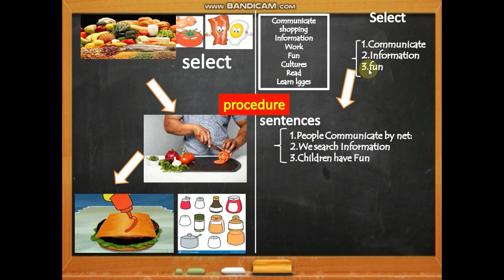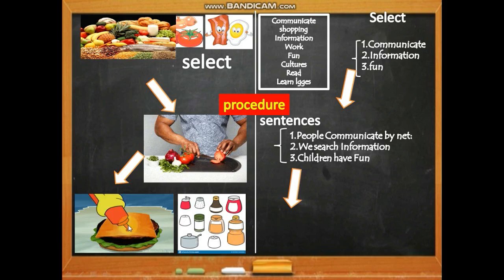Keep the sentences simple. Subject, verb, object — that's it. Here in the burger, we've added the seasoning. In the paragraph, the seasoning is the sentences, and every sentence needs an example.